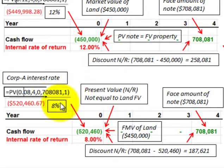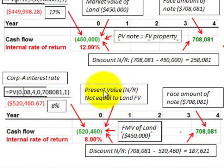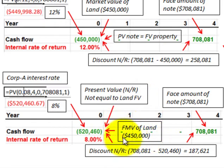Now let's look at the case where we had used the 8% interest rate instead of 12%. Based on 8%, the present value of the $708,081 principal discounted back for four years would be $520,460. That's what the present value of the note receivable would be at its issue date. You can see that it's not equal to the land's fair market value — the fair market value was $450,000, while the present value at 8% is $520,460.